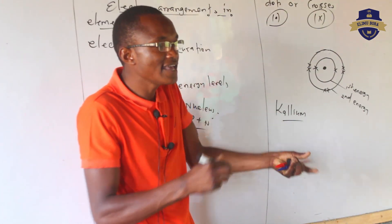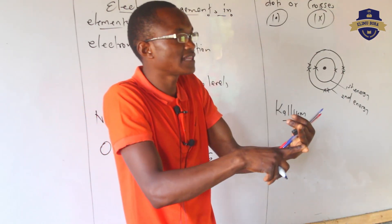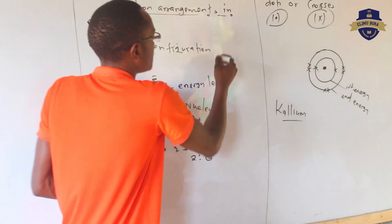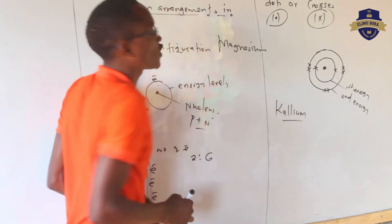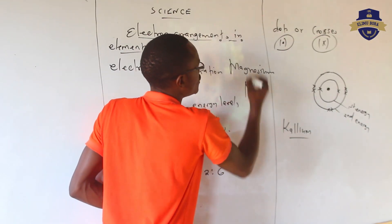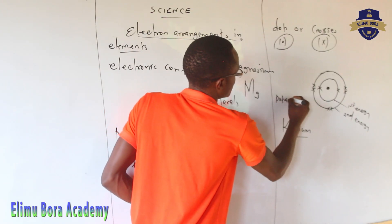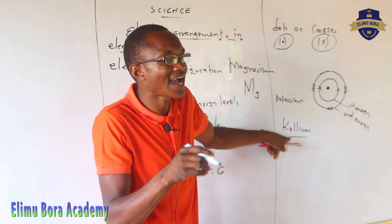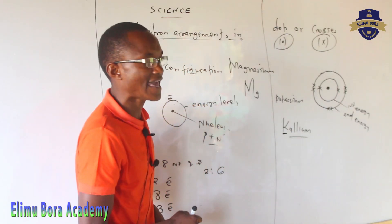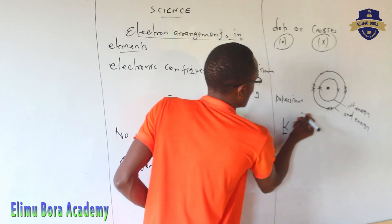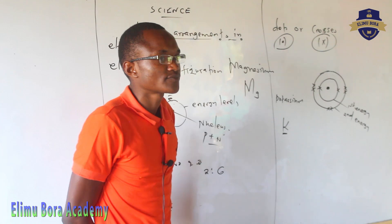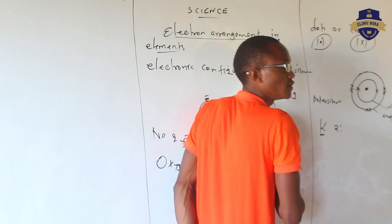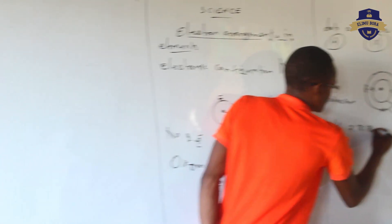The chemical symbol can either come from Latin words, or you take the first letter of an element and any letter from the second onwards. For example, magnesium is written as Mg. For potassium, its chemical symbol is K because its name is derived from the Latin word Kalvium, so we pick the first letter, capital K. Potassium is element number 19, and therefore its electronic configuration is 2:8:8:1.